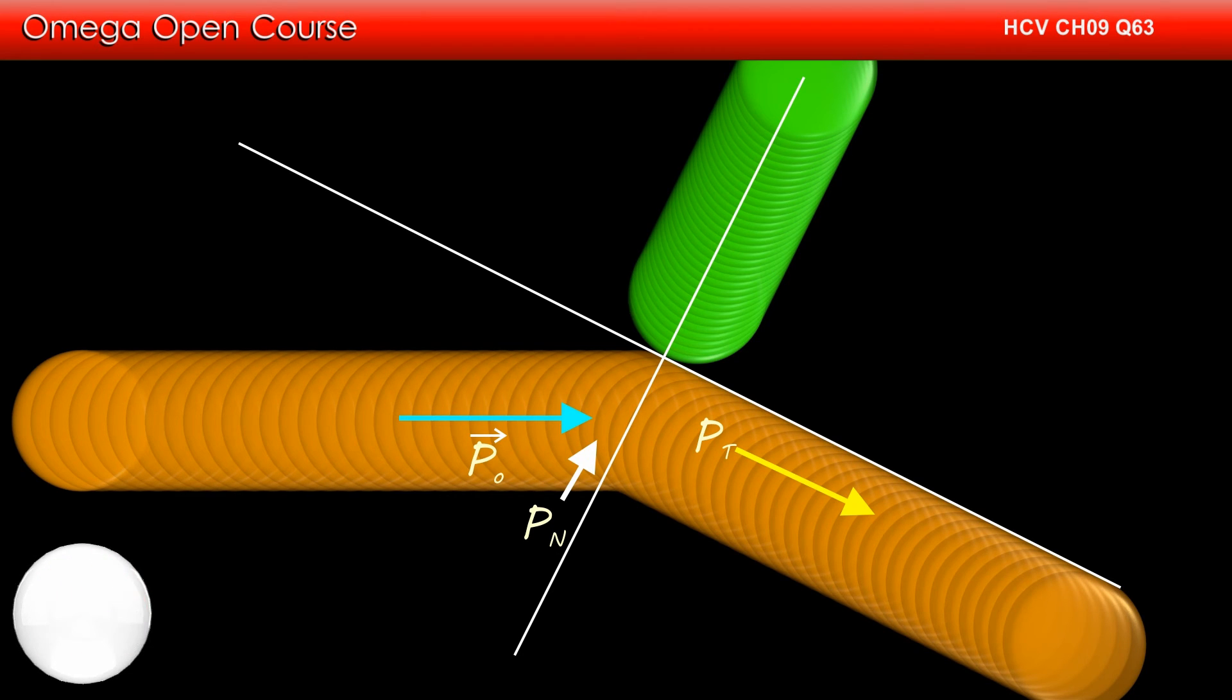However, in normal direction, there is a perfectly elastic head-on collision. We know that when a body collides elastically and head-on with another body of equal mass at rest, the incoming body stops while the body at rest starts moving with exactly the same speed as the incoming body.